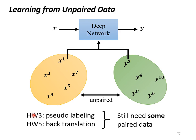In homework 3, you have to train a model first, and this model can help you provide pseudo-labels. If there are not many paired data at the beginning, your model will be bad and you have no way to produce a good pseudo-label. As for back translation, you also need a model of back translation first. So for the methods in homework 3 and homework 5, we still need some paired data. But suppose we encounter a more difficult situation where we don't have any paired data — what should we do?